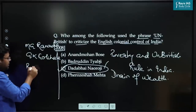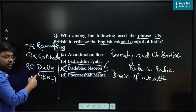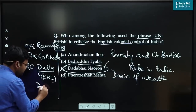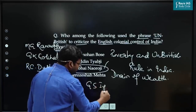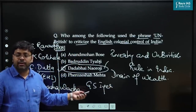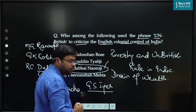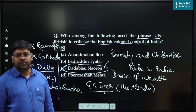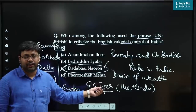R.C. Dutt wrote the Economic History of India and was also an economic historian who exposed the drain of wealth. G. Subramaniya Iyer was another great leader who exposed the drain of wealth from India. He was also one of the founders of The Hindu newspaper, which was started in 1878.